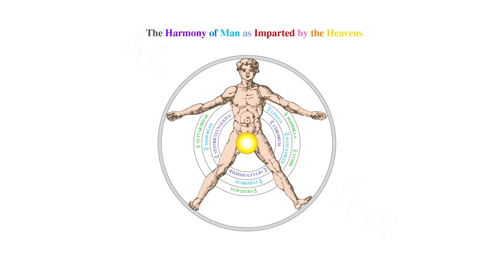The sun in all his glory influences our oculus dextra. Mars influences the oculus sinister, or left ear, the rennes, or kidneys, the pudenda, and the cistis felis, or air in the chest.